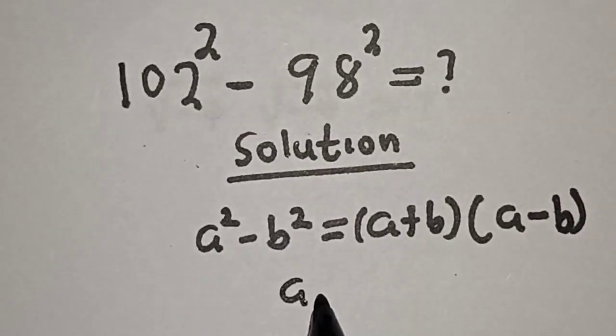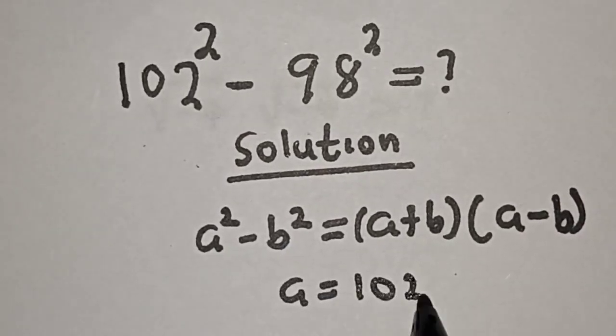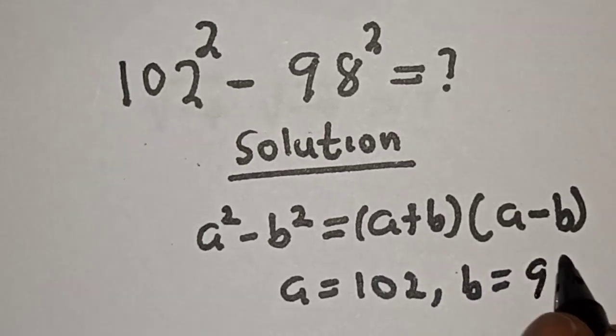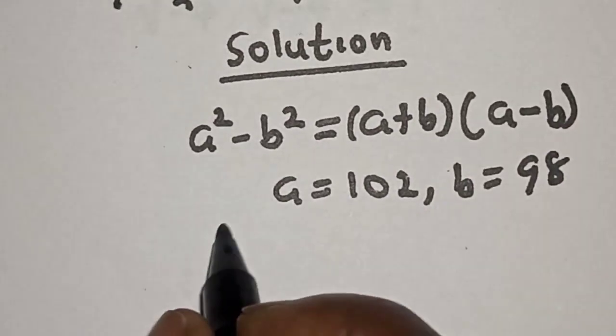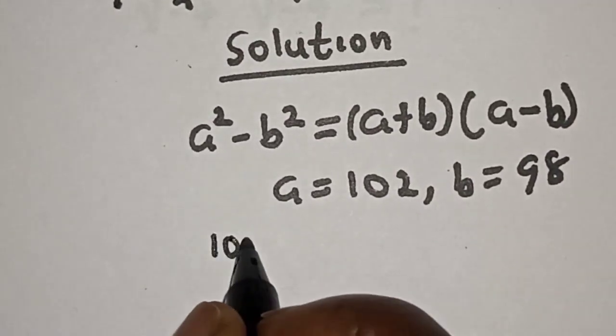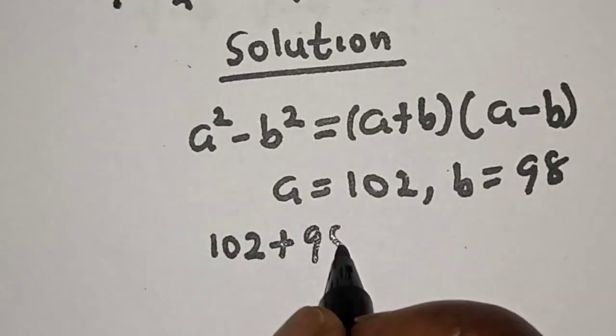Where a is equal to 102, b is equal to 98, so we have 102 plus 98 bracket 102 minus 98.